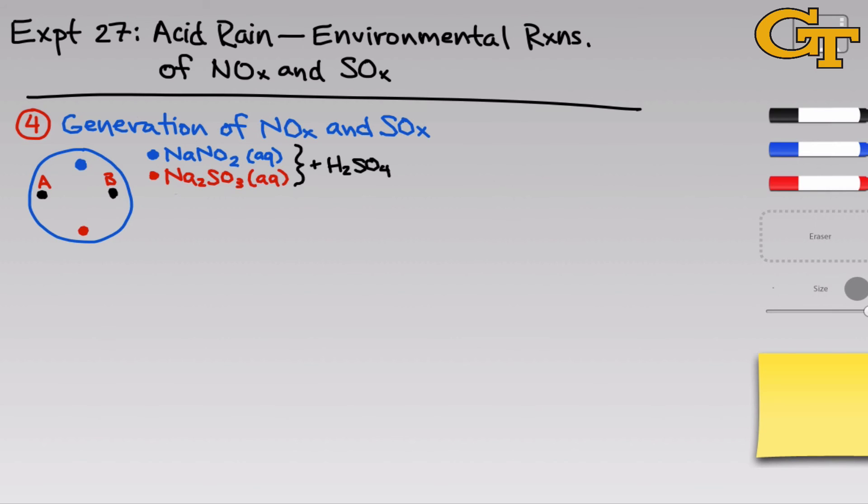The blue and the red droplets will be where we generate the NOx and the SOx. So we'll use, as we have been using, the sodium nitrite and the sodium sulfite here with H2SO4 to actually generate the gases. And then A and B we'll use as sort of analytical droplets. And so in drop A, we'll have BaCl2, and in drop B, we'll have starch and KI.